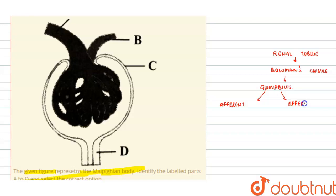...which takes away the blood, which takes away the filtered blood. Afferent arteriole consists of the non-filtered blood whereas efferent arteriole consists of the filtered blood. This Bowman's capsule further extends into the tubules like proximal convoluted tubules.